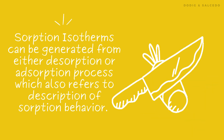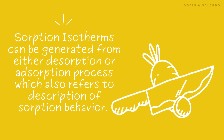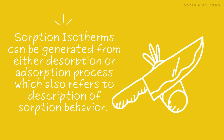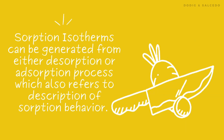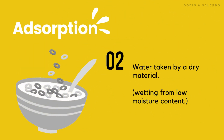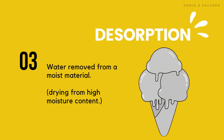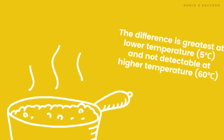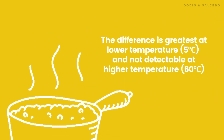Sorption isotherms can be generated from either desorption or adsorption processes, which also refers to the description of sorption behavior. To define each: adsorption is the water taken up by a dry material, and desorption is the water removed from a moist material. The difference between them is greatest at lower temperatures, around 5 degrees Celsius, and not detectable at higher temperatures, around 60 degrees Celsius.